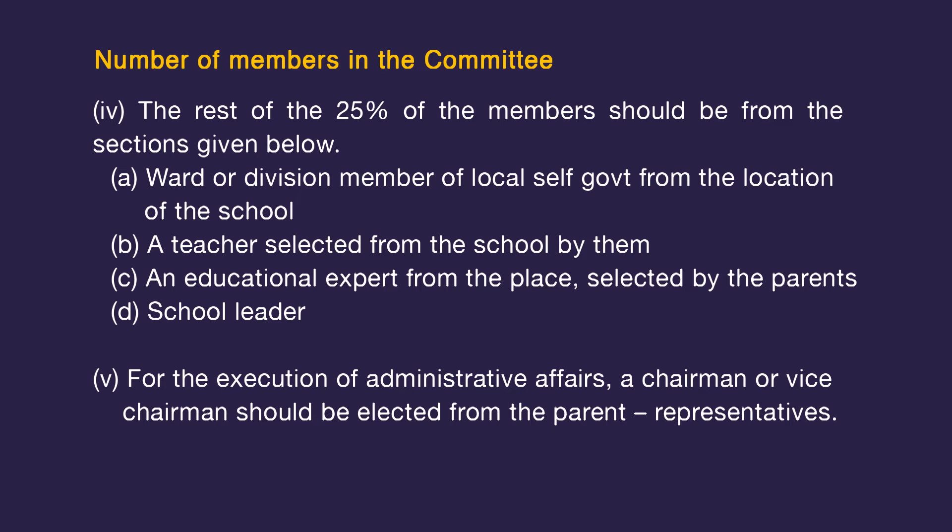Enough representation should be given to parents representing backward sections and depressed categories. The remaining 25% of members should come from: (A) a ward or division member of local self-government from the location of the school; (B) a teacher selected from the school; (C) an educational expert from the place selected by the parents; (D) the school leader. For administrative affairs, a chairman or vice chairman should be elected from the parent representatives. The headmaster or teacher-in-charge would be the ex-officio member convener. In schools with a higher secondary section, the principal would be the convener and the headmaster the joint convener.